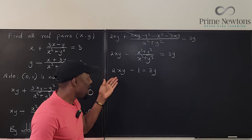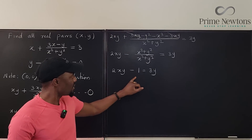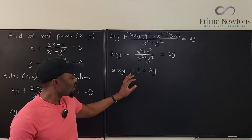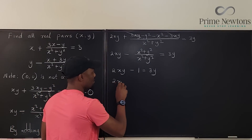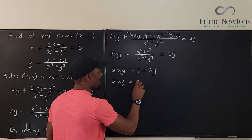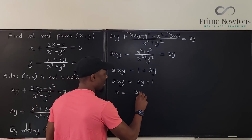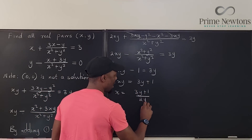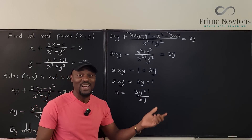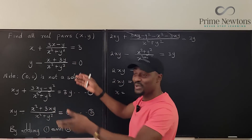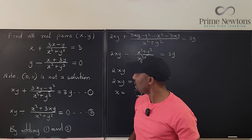We've been able to generate a much simpler equation. Now, which variable is easier to isolate? I think we should isolate X here. That tells us 2XY equals 3Y plus 1, so X equals (3Y + 1) over 2Y. Because we've isolated X in terms of Y, we can go back to either of the two equations and plug this in. We should be able to get a nice answer — I think the second equation is easier because of the zero on the right-hand side.